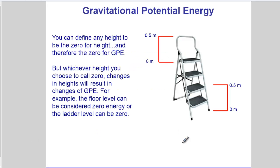We can define any height to be zero for height, therefore that height would be zero gravitational potential energy. So if we're down here on the ground, if we're down here on the ground, right there, at that location where X marks the spot, we can just arbitrarily say that the ground is zero height.